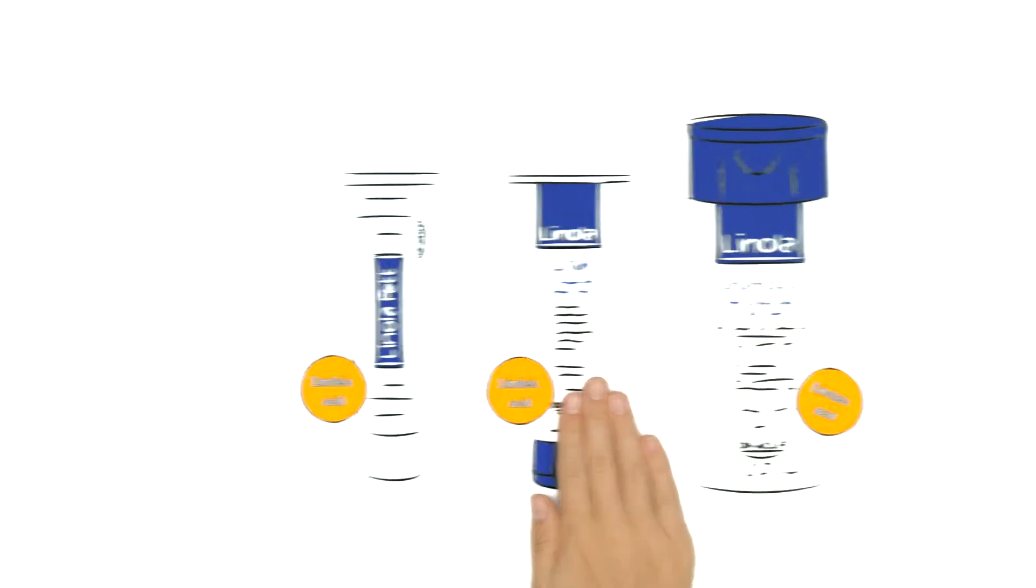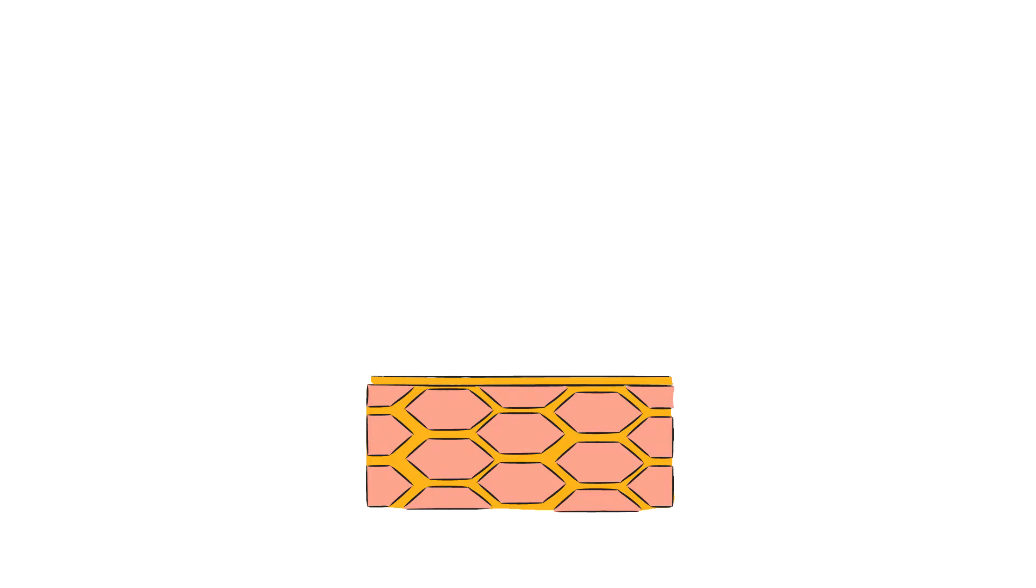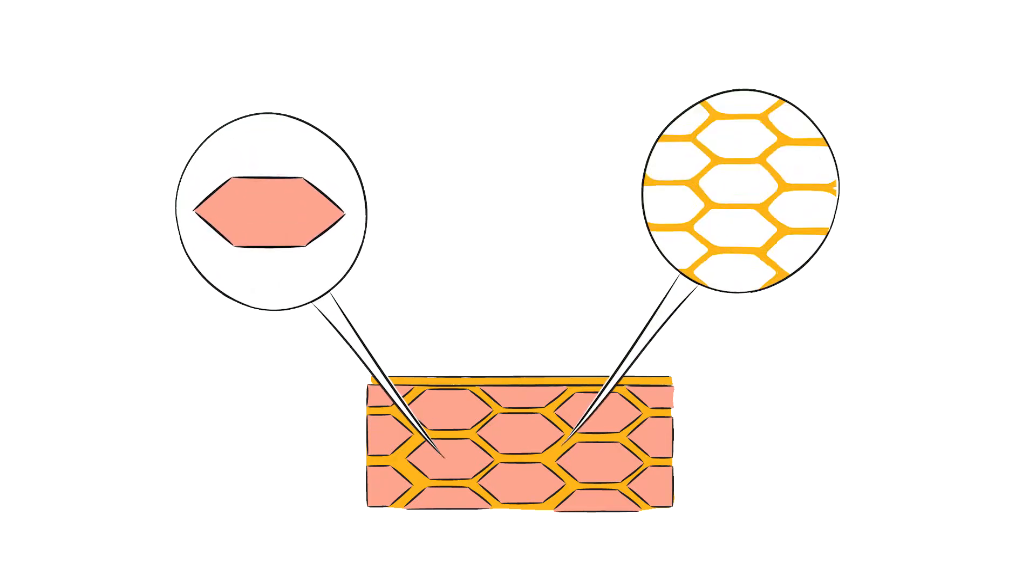Our skin is equipped with a natural protective barrier inside its outermost skin layer, also called the epidermis. The skin barrier is like a brick wall. The corneocytes act as bricks and are surrounded by the mortar, consisting of structural lipids which are rich in linoleic acid.